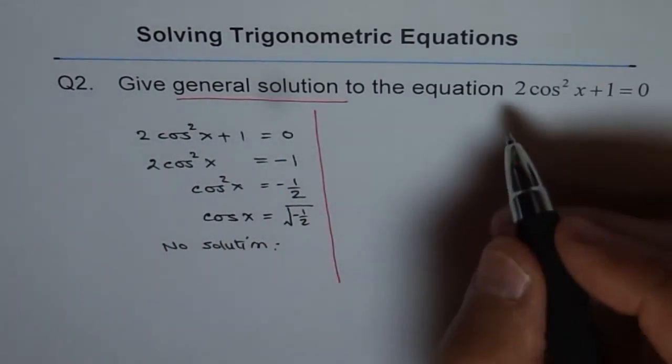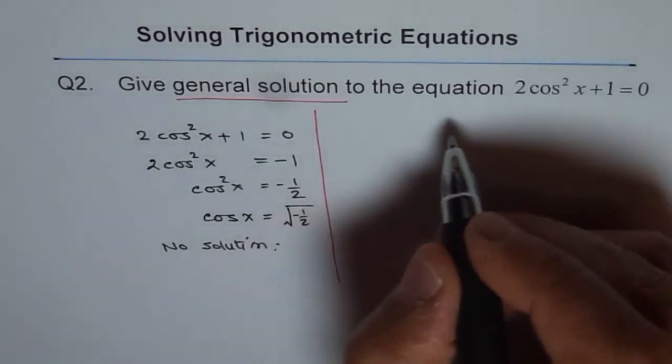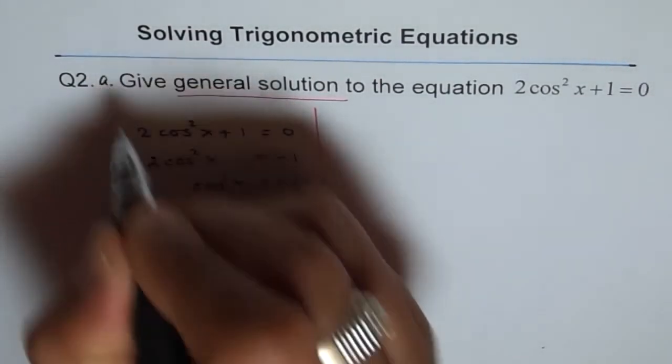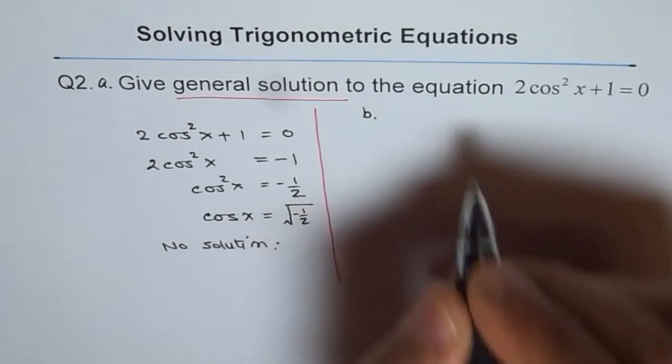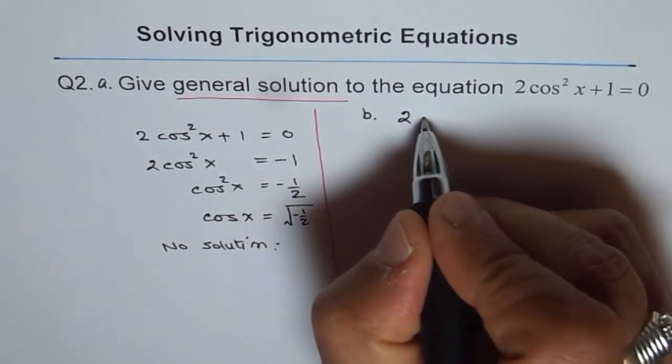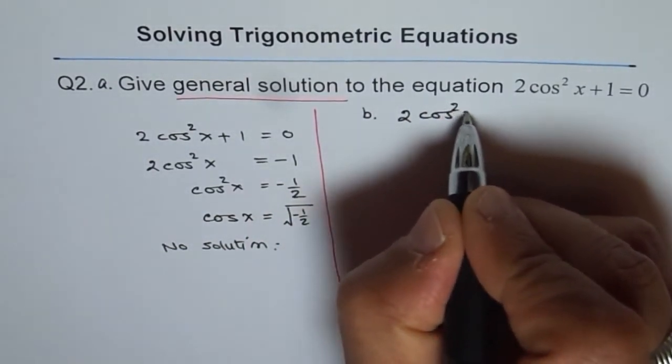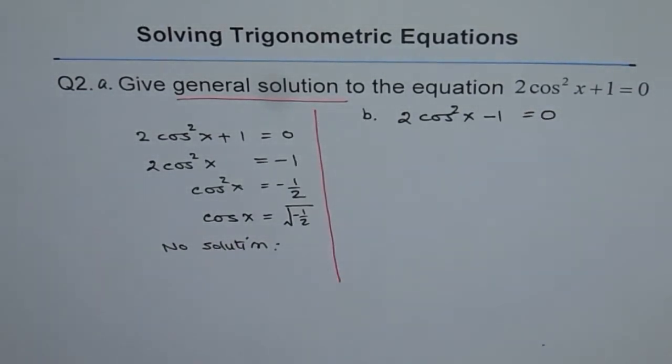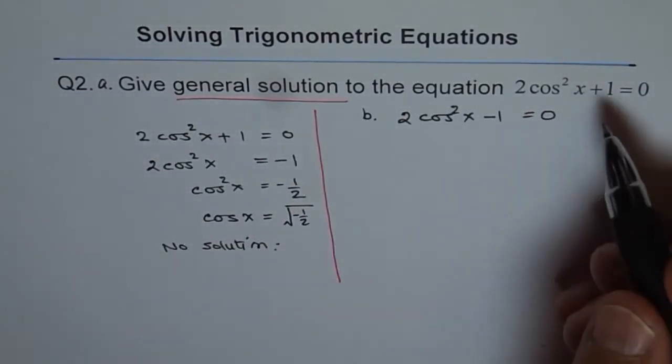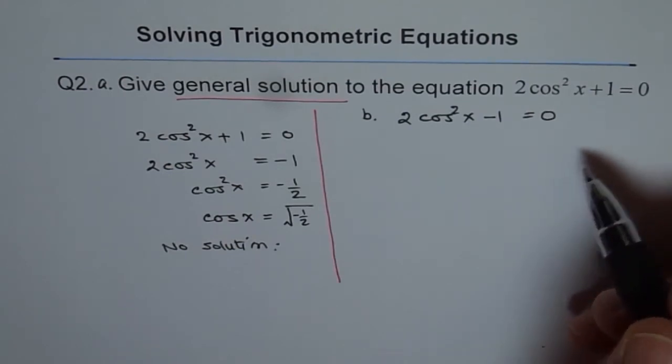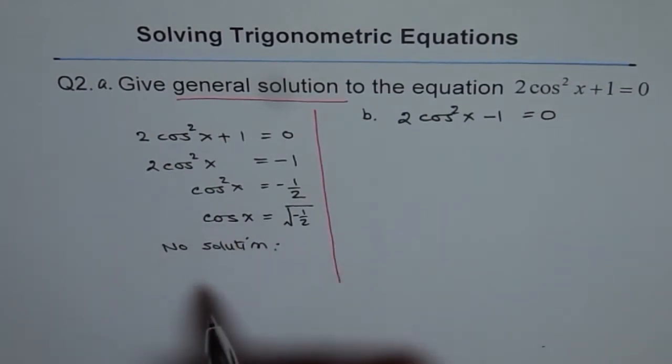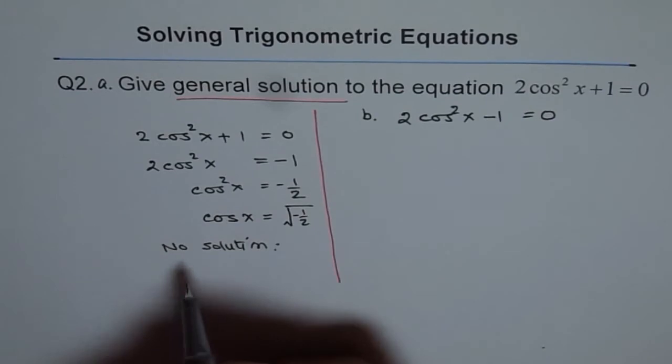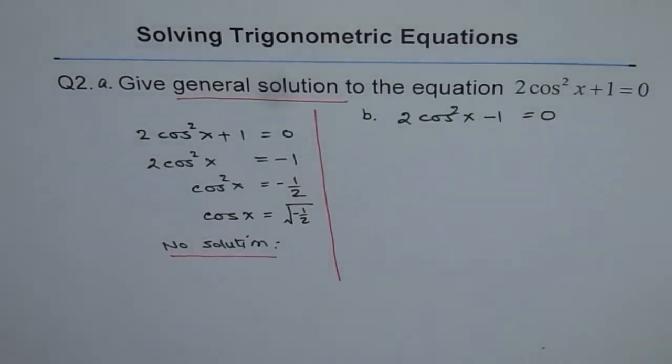So now, let's change the question a bit. Let me do this as question A and I am doing a different question here as B, which is 2 cos square x minus 1 equals to 0. I changed this question because there could have been an error in typing, but in case we get a question like this, no solution is also the right solution to this question. Remember that.